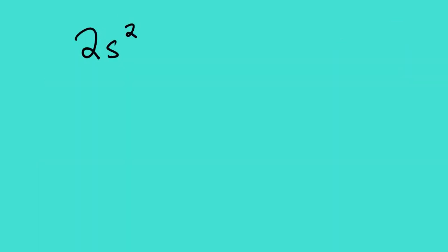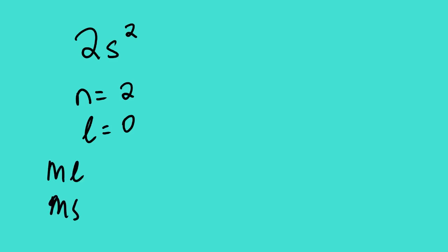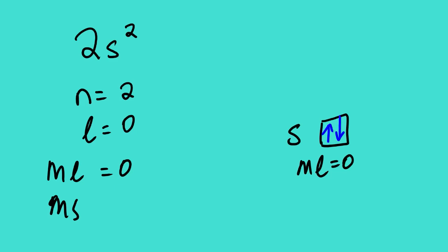For 2S2, N equals 2. Since it is an S orbital, L equals 0. S has only one orbital, so there is no choice — ML equals 0. Filling in 2 electrons, the second electron faces down. Therefore MS equals negative one-half.